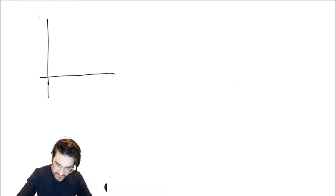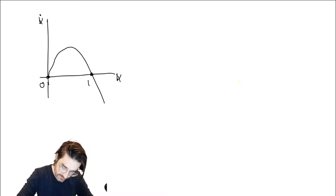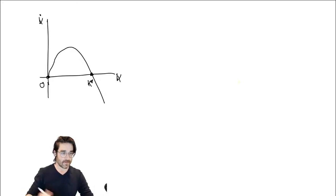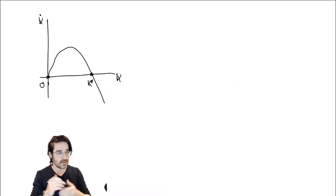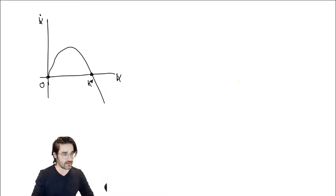We drew that graph of K-dot versus K. There's a zero here, it goes up and then down, with K-star right there. We talked about this basically implicitly when drawing that graph — the uniqueness. In this case, global stability is enough to just show that it's a unique steady state. All you need is that it has a unique crossing point after zero.